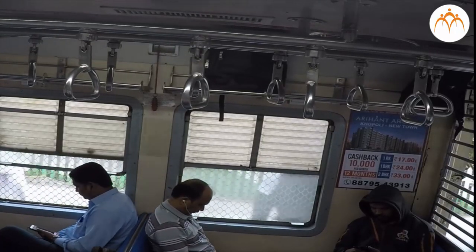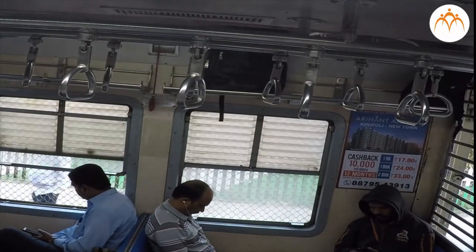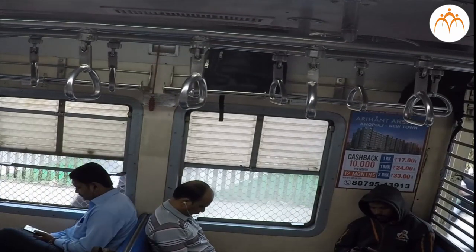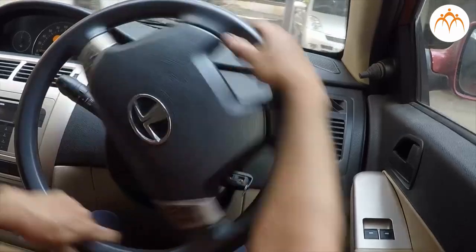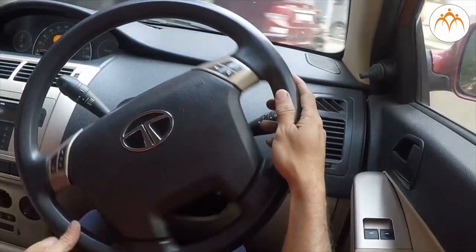Handles in the moving trains swing backwards when train starts and forward when train halts. A car continues in straight line until we change that direction using external force on its steering.